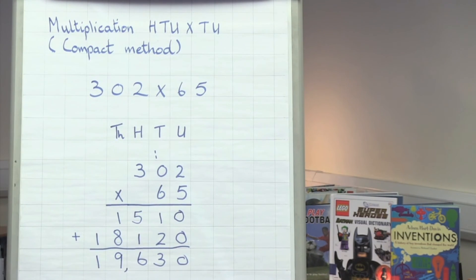That is how we multiply three digits by two digits using the compact method.